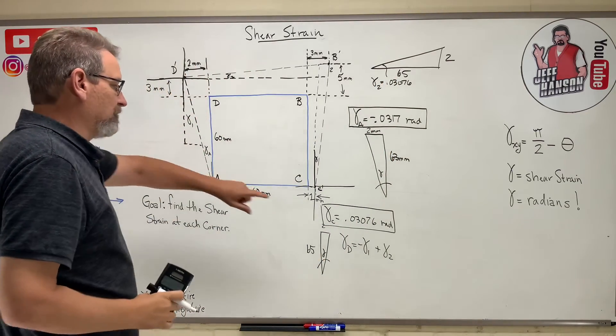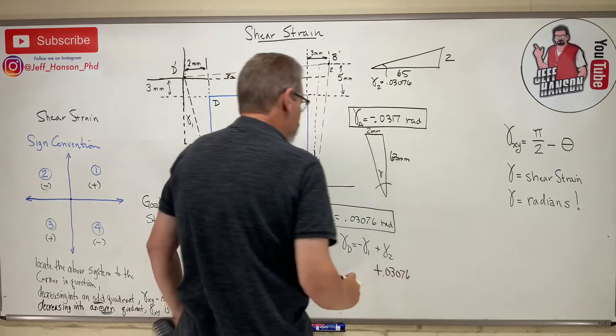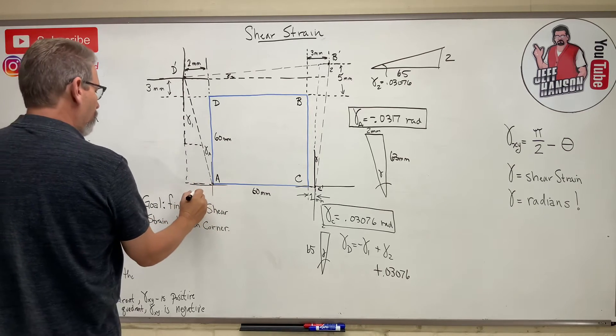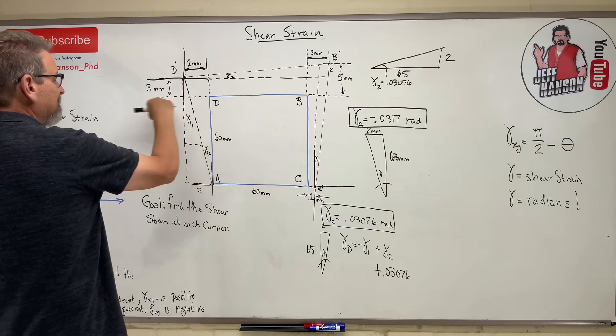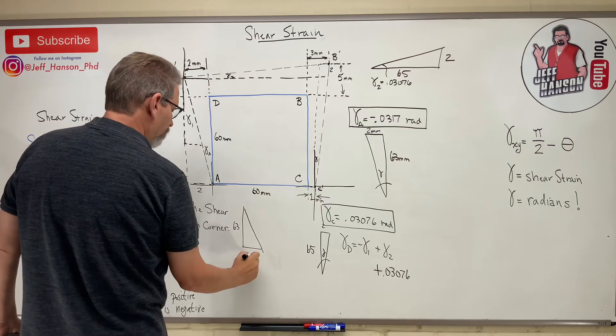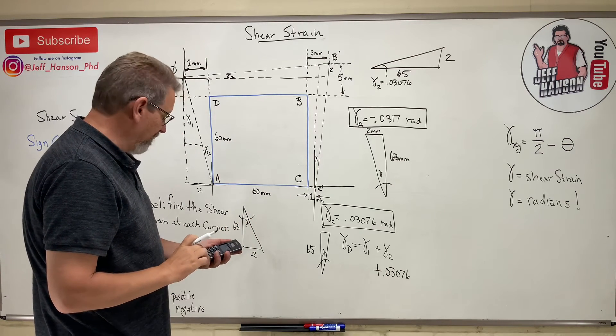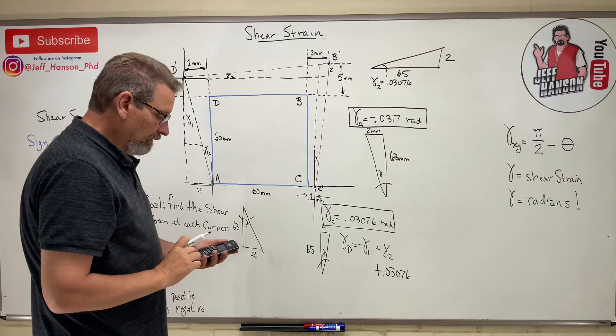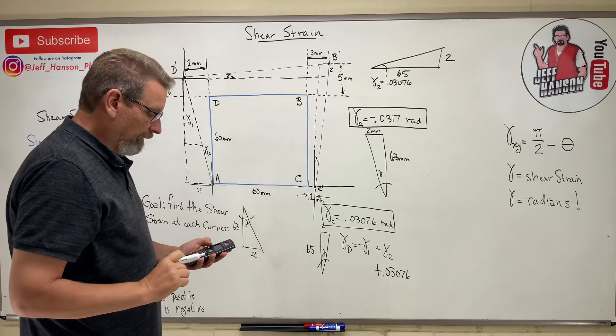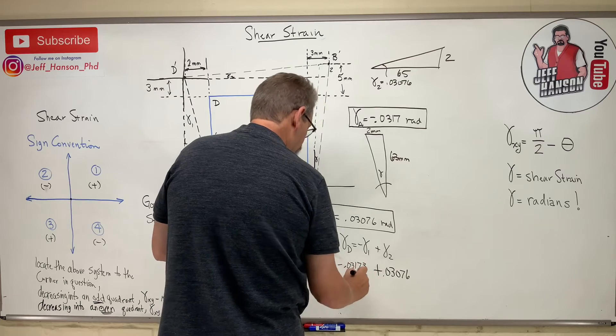Now we need to find gamma 1. So gamma 1 is this triangle here, so this is 2, and the height is 60 plus 3. So that triangle looks like this, 63 and 2. So here's gamma 2 right there. So let's see, opposite 2 divided by 63, and then inverse tan. So that one's negative 0.03173.